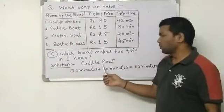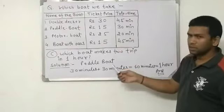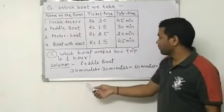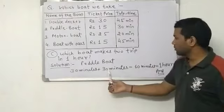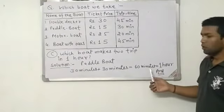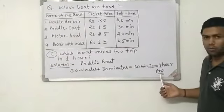So the solution is here. Paddle boat, as already discussed, 30 minutes plus 30 minutes is 60 minutes. We all know that 60 minutes is equal to one hour.